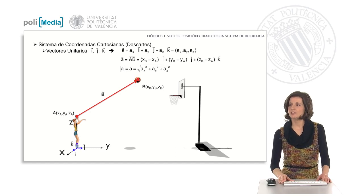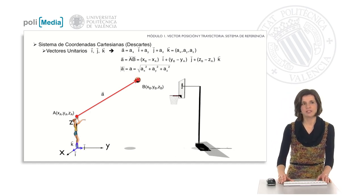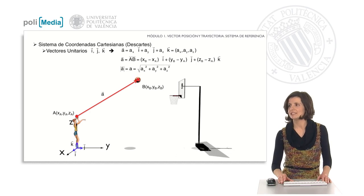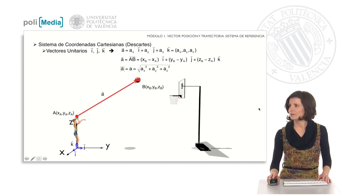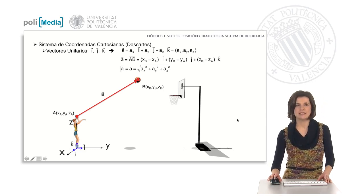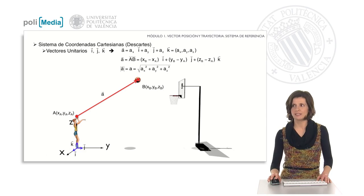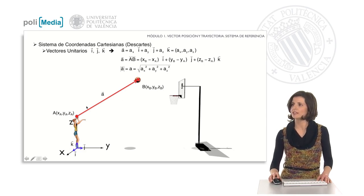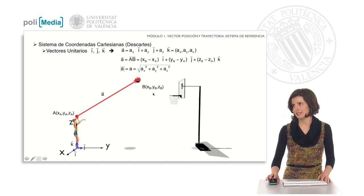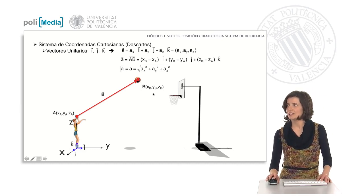On these Cartesian axes are defined three unit vectors i, j, k, perpendicular to each other, which are also called versors. These versors allow us to express any vector in space from its Cartesian components. For example, we see a vector a that has an origin point and an end point. These points can be expressed by their Cartesian coordinates x, y, and z.